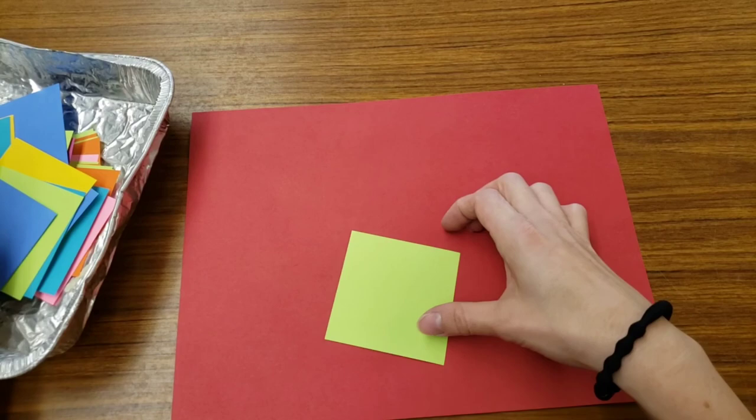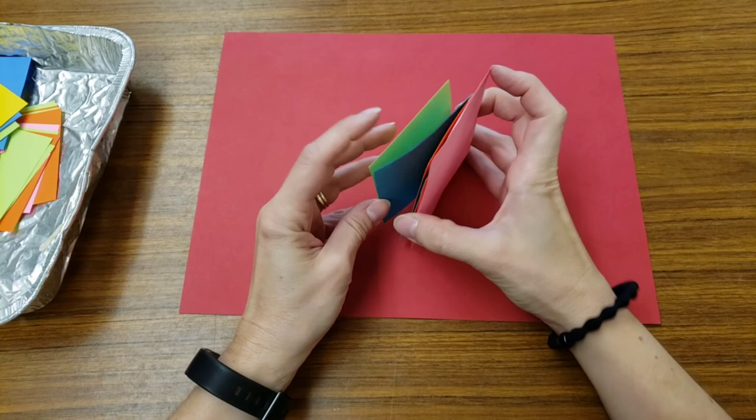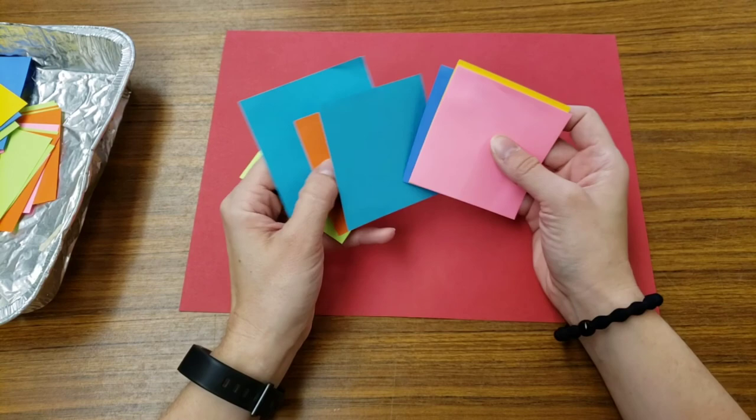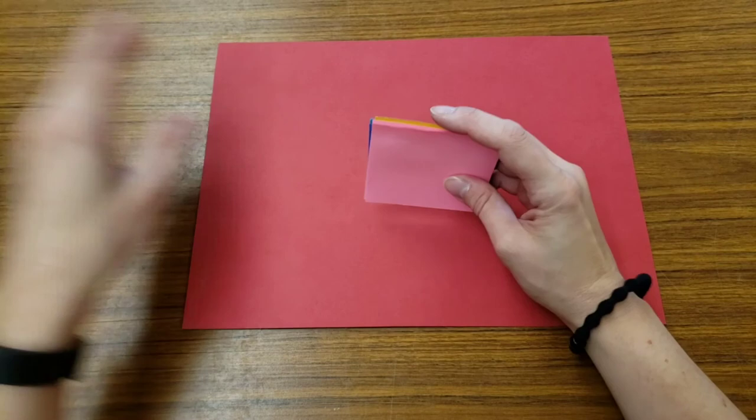Our job is to build a castle. I want you to pick out eight squares, any color you want. Yes, colors can repeat if you want them to. Pick out eight squares to start with from your tray and then leave the tray alone.